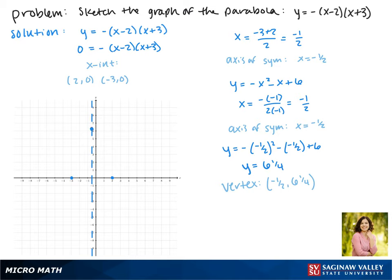The last piece of information we can find is the y-intercept. Again, it's perfectly fine to use either form, so I'll use the intercept form. Plugging in 0 for x gives us the y-intercept, which gives us y = 6. So the point (0, 6) is on our parabola.